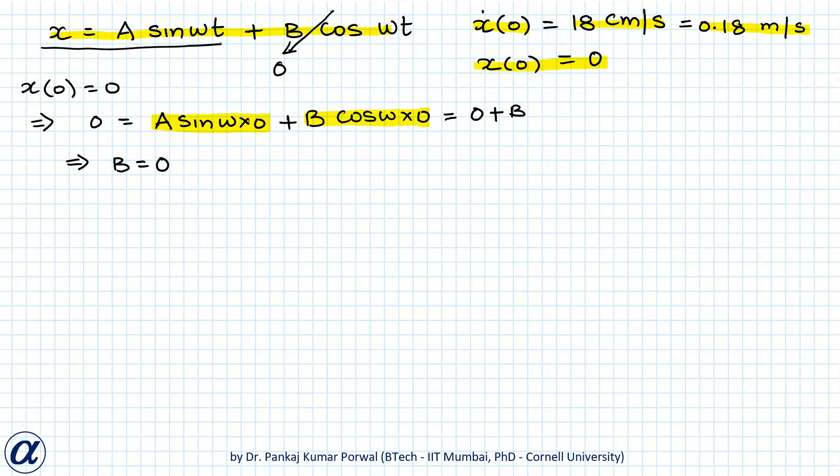Now I differentiate that to get x dot equals to A ω cos ωt. If I put value of x dot 0 in this then I get 0.18 equals to A ω cos ω into 0 that is just equals to A ω.